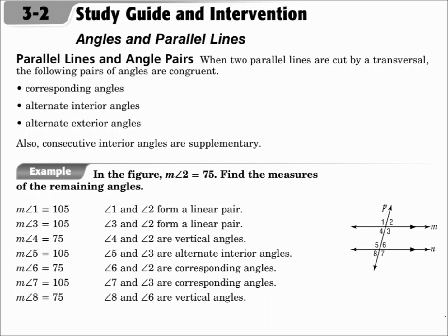When two parallel lines are cut by a transversal, the following pairs of angles are congruent: corresponding angles, alternate interior angles, and alternate exterior angles.